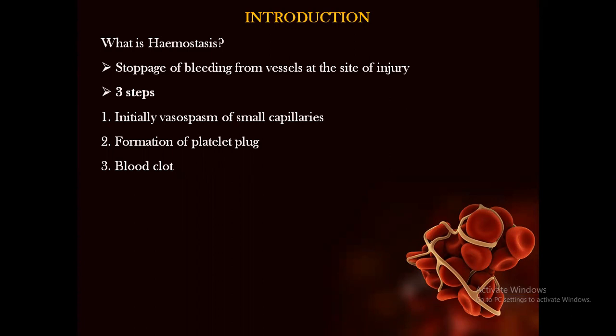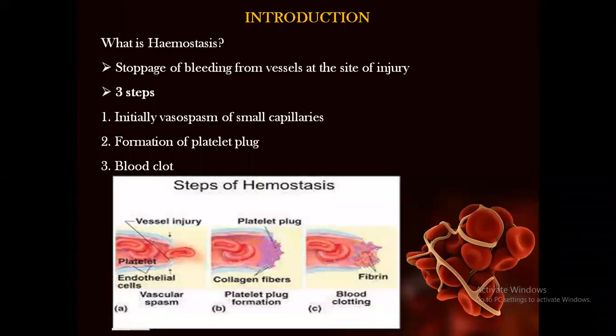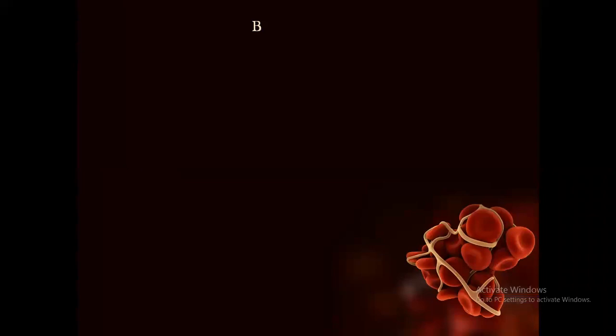Hemostasis is the stoppage of bleeding from the site of injury. It contains three steps: first, the vascular spasm; second, the formation of platelet plug; and finally, the blood clot.